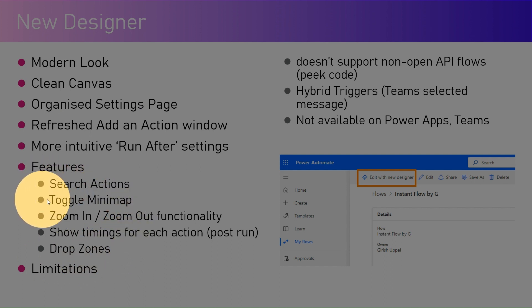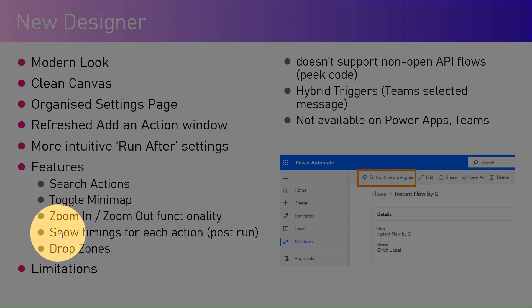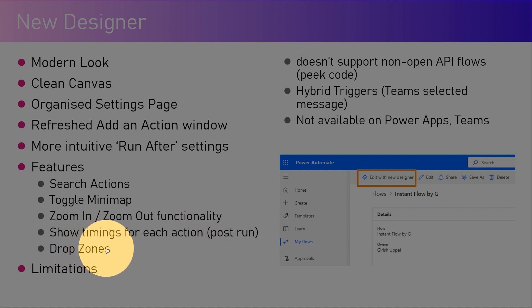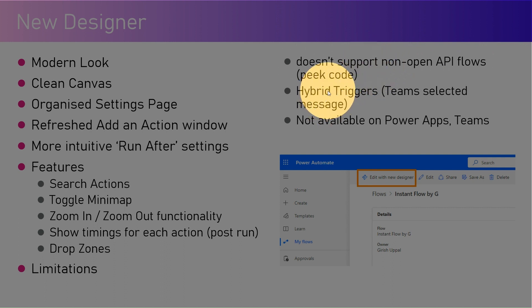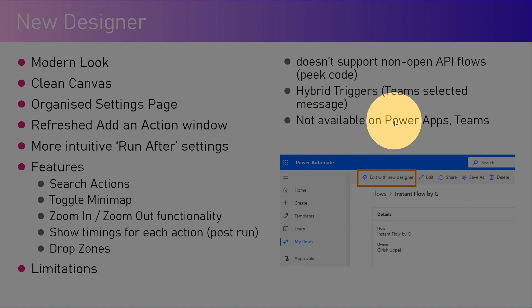These additional features include searching actions, toggling the mini map, zoom in and zoom out functionality which is improved a lot, show timings for each action, and post-run drop zones. But there are some limitations as well — the new interface doesn't support non-open API flows, peeking the code, hybrid triggers like Teams selected messages.